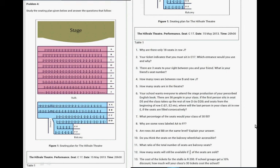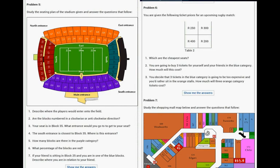Stadium seating. Describe where the players would enter the field. Are the blocks numbered in a clockwise or anti-clockwise direction? Your seat is in Block 35. What entrance would you use to get your seat? The side entrance is closest to Block 35. Where is this entrance? How many blocks are there in the purple category? What percentage of the blocks are red? If your friend is sitting in Block 25 and you're in one of the blue blocks, describe where you are in relation to your friend.